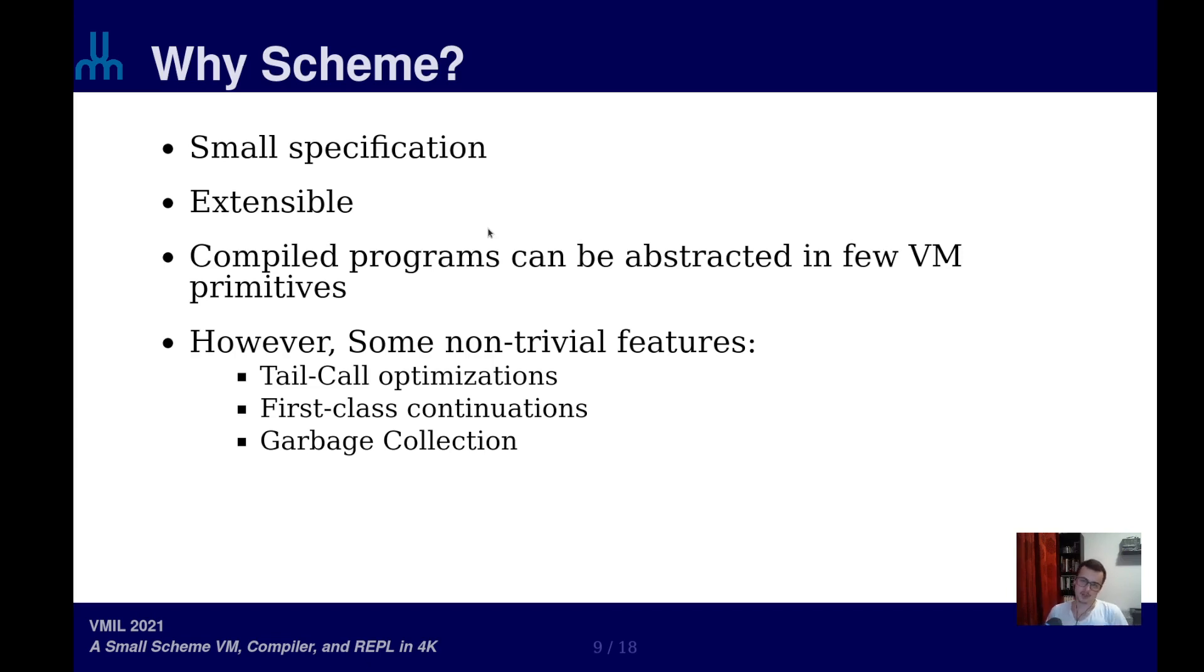However, the choice of Scheme comes with some non-trivial features to implement. So we have garbage collection to implement, we have tail call optimization, and first class continuations. And these functionalities are not trivial to implement in the limited code size.